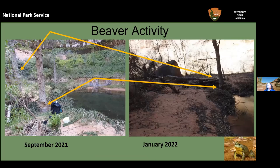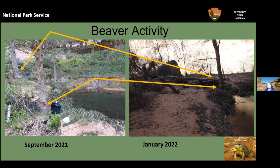Between September 2021 and January 2022, beavers started gnawing on trees — one was completely felled by January 2022. This new beaver dam backs water up into the main pond a bit and disrupted the long-term monitoring site where stream outflow was being measured. The decision was made not to disturb the beavers and allow that process to take place, even though long-term monitoring sites were lost. However, this could complicate bullfrog control efforts.